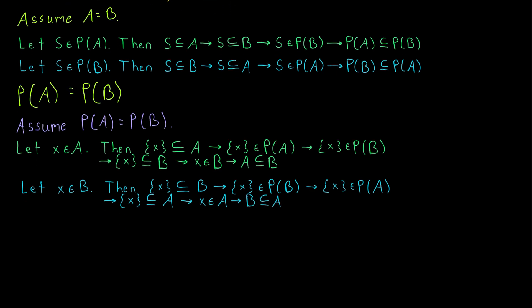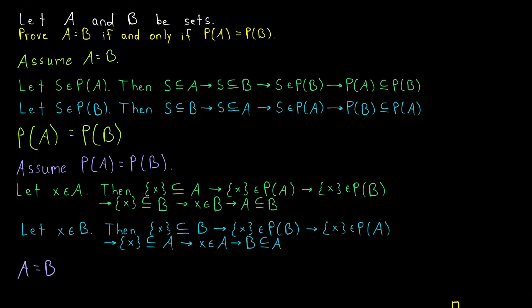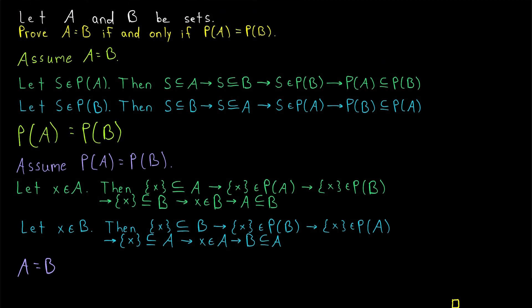And so we have proven that if the power set of A equals the power set of B, the sets A and B must be equal. That completes the proof. If A and B are sets, then A equals B if and only if the power set of A equals the power set of B. Put more simply, two sets are the same if and only if they have the same power sets.